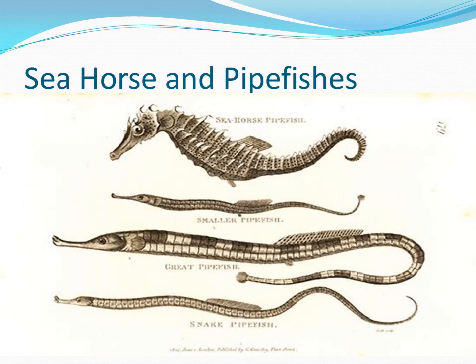In this slide you may see the seahorse and pipefishes. Seahorse is the name given to 45 species of small marine fish in the genus Hippocampus. Hippocampus comes from the ancient Greek, from 'hippos' meaning horse and 'campos' meaning sea monster. Having a head and neck suggestive of a horse, seahorses also feature segmented bony armor, an upright posture, and a curled prehensile tail.